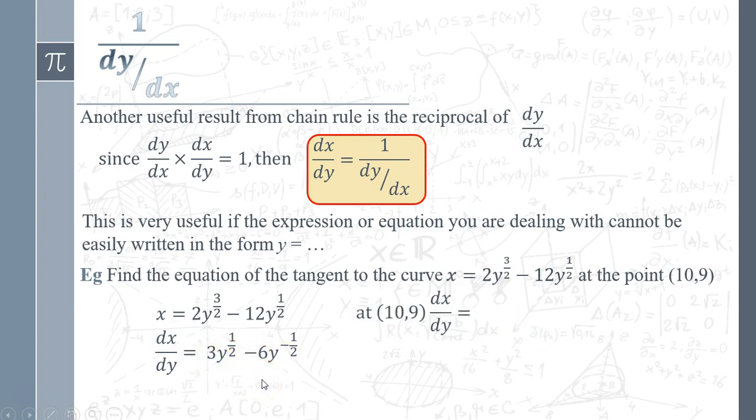At the point (10, 9), dx/dy - the y coordinate has a value of 9, so that's what we're going to put in because it's in terms of y. So we've got dx/dy has a value of 7.